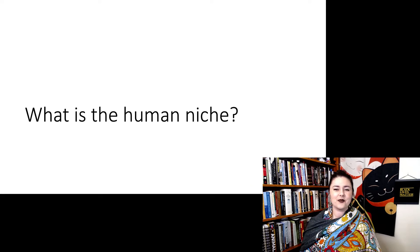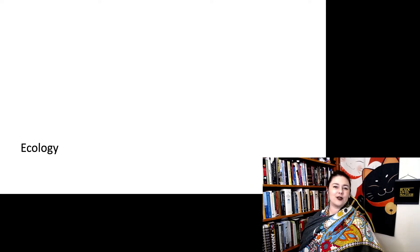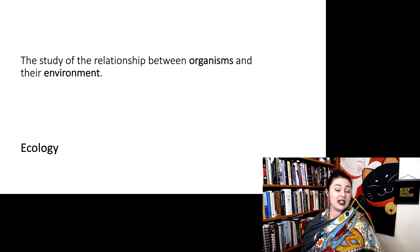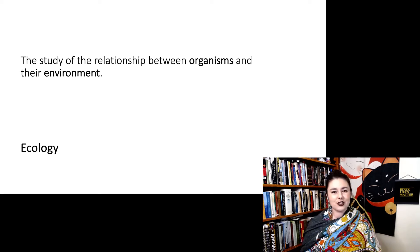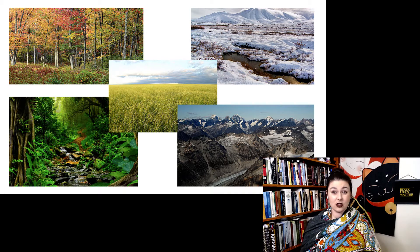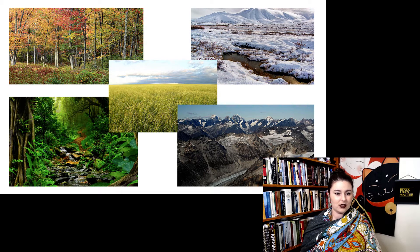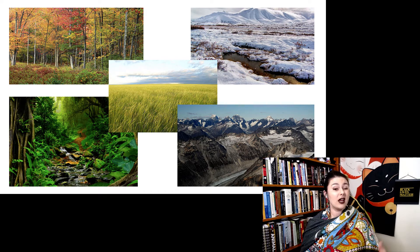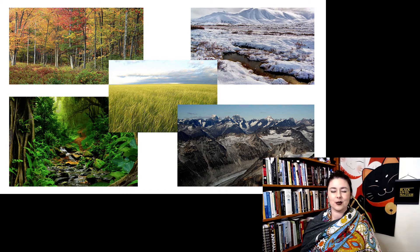Let's start here: what is the human niche? We are within the realm of ecology. Ecology is a type of biology where we're looking at the relationship between an organism and its environment — a really interesting field of study. Humans are all over the planet. These are just a few of the different environments you can find humans living in: temperate forest regions, grasslands, really cold tundra regions, high altitude mountains, and some people even live in the rainforest.